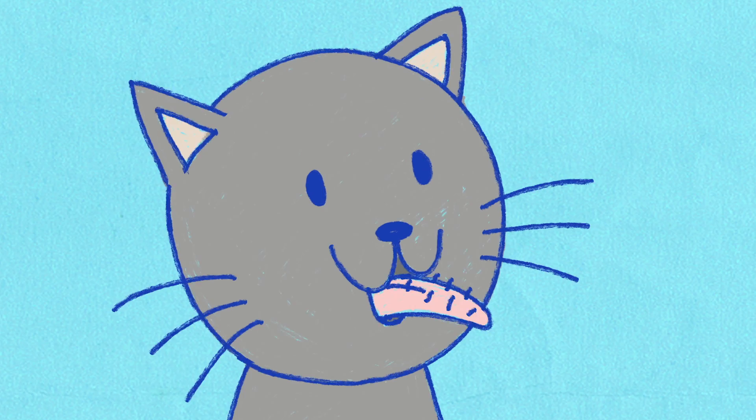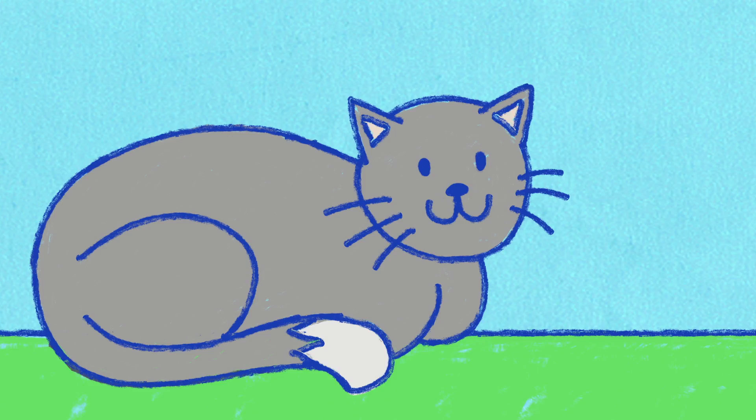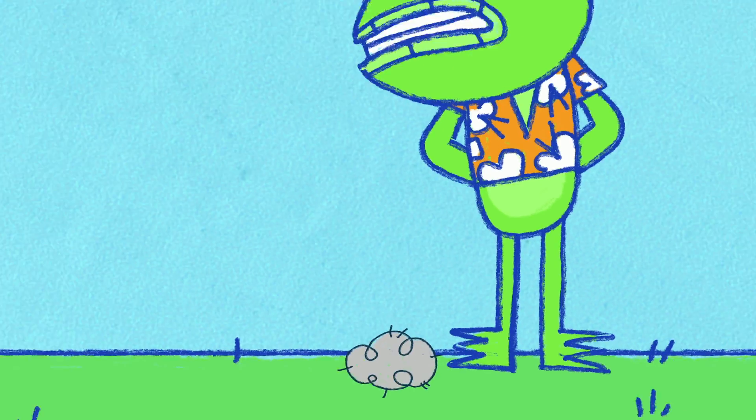Cats' tongues are covered in hundreds of tiny spikes made from keratin. The same stuff as human fingernails. That's how cats groom themselves with their tongues. It's like a mini hairbrush. Well, that explains hairballs, then. Lovely.